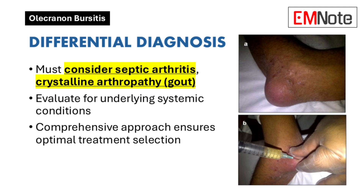Differential Diagnosis: While evaluating olecranon bursitis, clinicians must consider various differential diagnoses including septic arthritis, crystalline arthropathy, and underlying systemic conditions. This comprehensive approach ensures appropriate treatment selection and optimal patient outcomes.